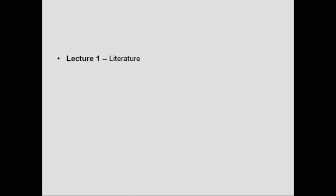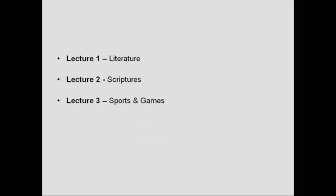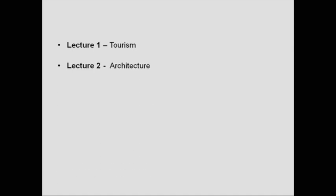Module 5 covers literature and sports. Literature and sports contribute to the rich heritage. We'll discuss our contribution in the field of the literary world, and sports and games that originated in India and that we have excelled at. The lectures will cover literature, scriptures, and sports and games.